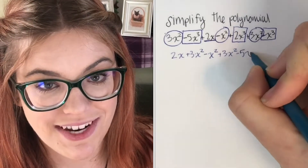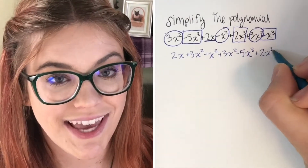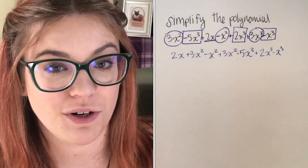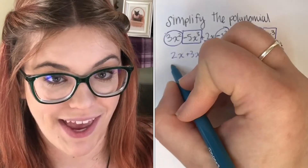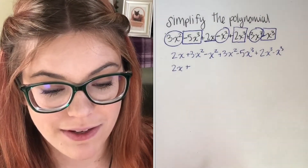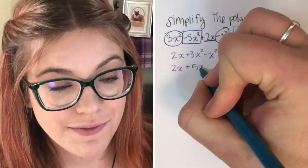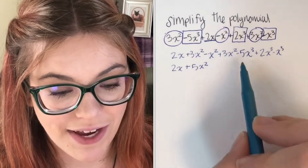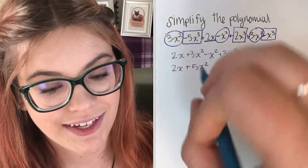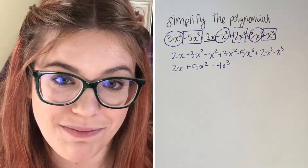So I'm gonna write them out: negative 5x cubed plus 2x cubed minus x cubed. Now that we have grouped the like terms, we're going to add and subtract them. So we have 2x plus, now we're gonna add 3x squared minus x squared plus 3x squared to get 5x squared. And then we'll add negative 5x cubed plus 2x cubed minus x cubed to get negative 4x cubed. And that is your simplified polynomial.